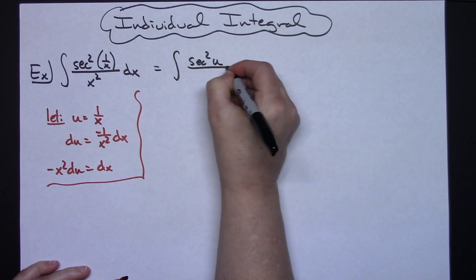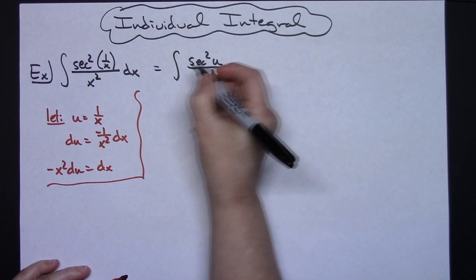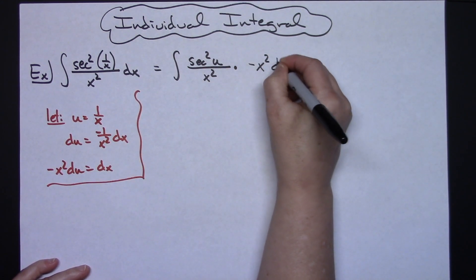On top, we'll have a secant squared, replacing that 1 over x with a u. So secant squared u all over, we'll have the x squared in the bottom. Replacing dx with what that equals, we'll have a negative x squared du.